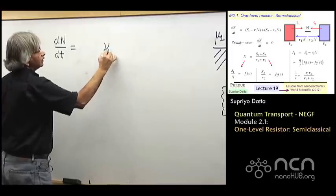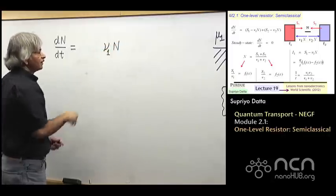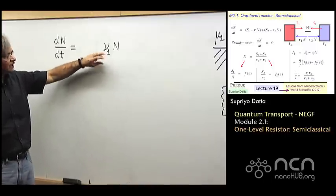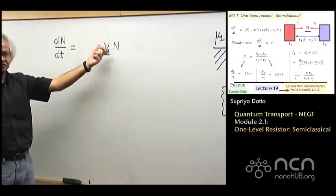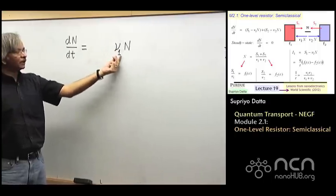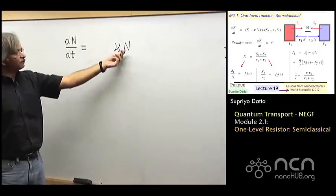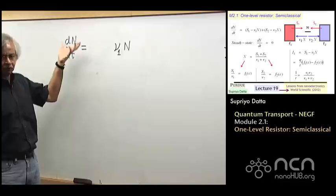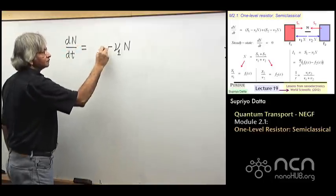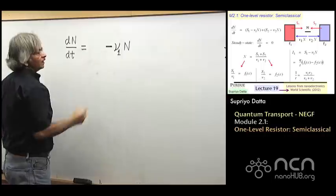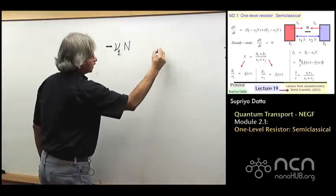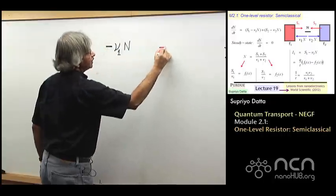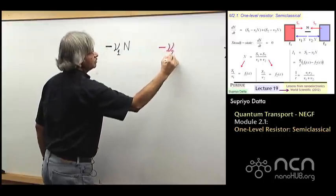So what I've written here, this has the dimensions of per second. So it tells you what is the rate at which electrons leak out into the contacts, into contact 1. And of course, if electrons leak out, then the number of electrons in that level would be going down with time, and so there should be a minus there. Similarly, electrons could leak out into contact 2. So I could write that as minus nu 2 times n.